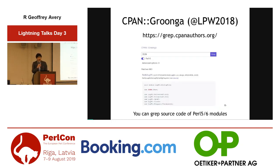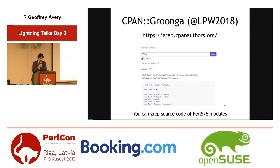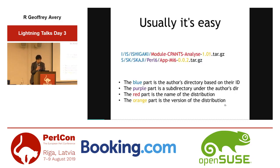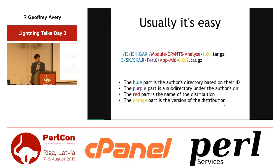Hi, I'm Jasper. Last year at the London Perl Workshop, I announced a new web service called CPAN Grunge, a CPAN source code searching service. The main feature is it allows you to search not only Perl 5 modules but also Perl 6 modules. If you're looking for something interesting, visit grep.cpanauthors.org. CPAN services like this need to parse distribution names for grouping, and CPAN::DistnameInfo has been the de facto standard Perl 5 module for that purpose. However, it is not maintained and has a few issues.